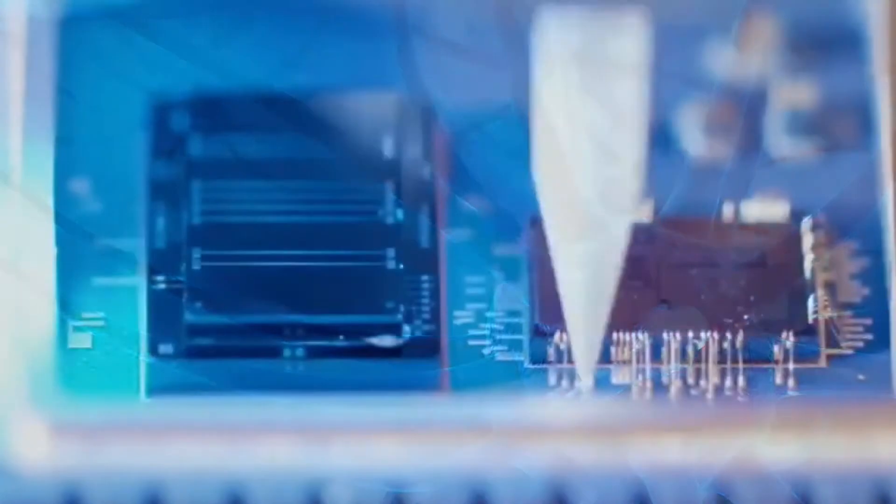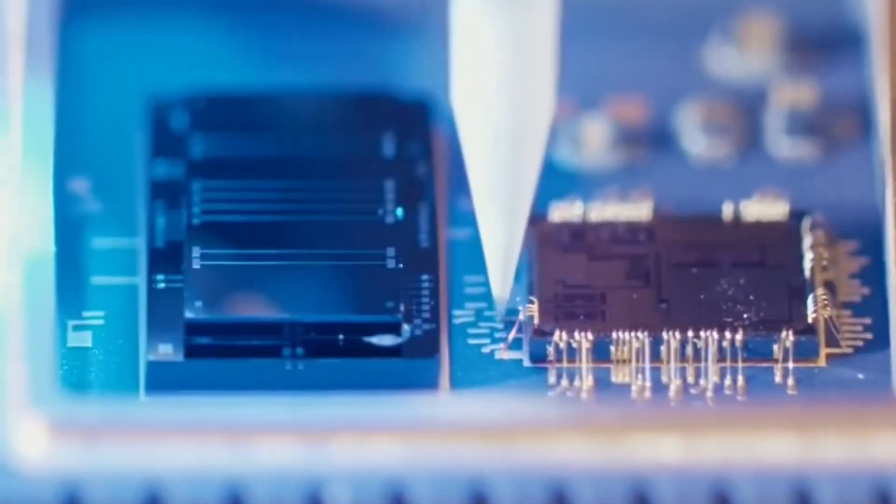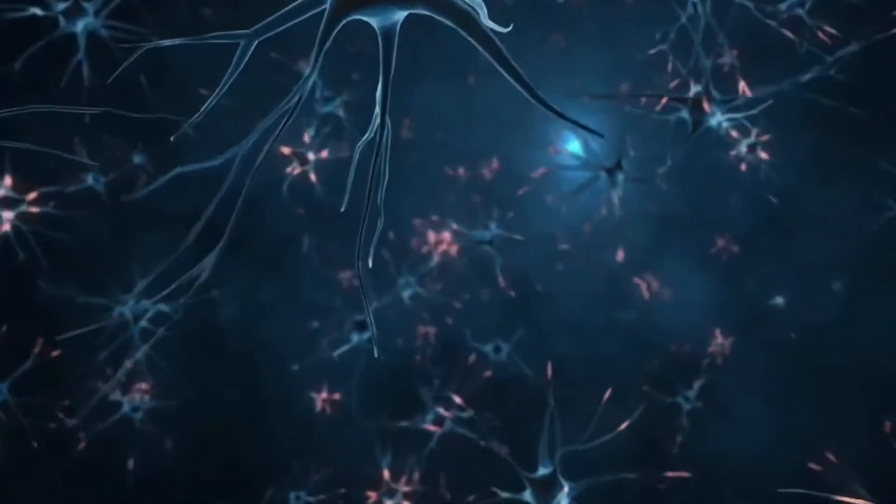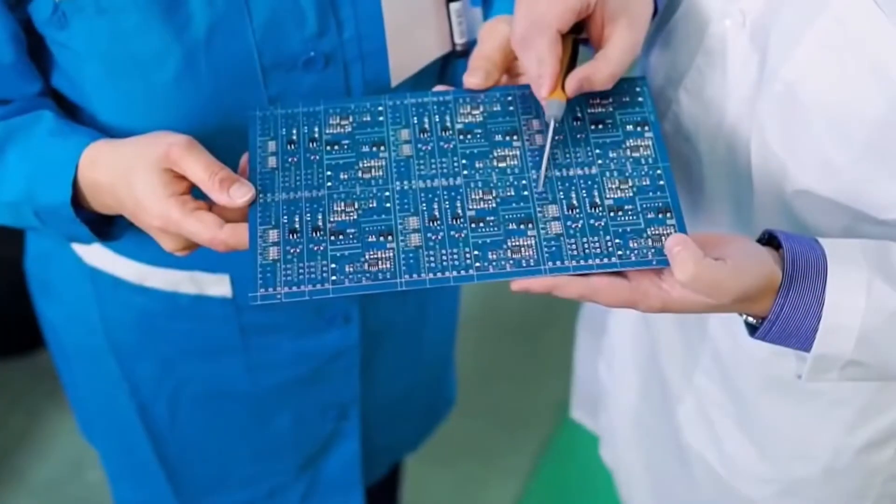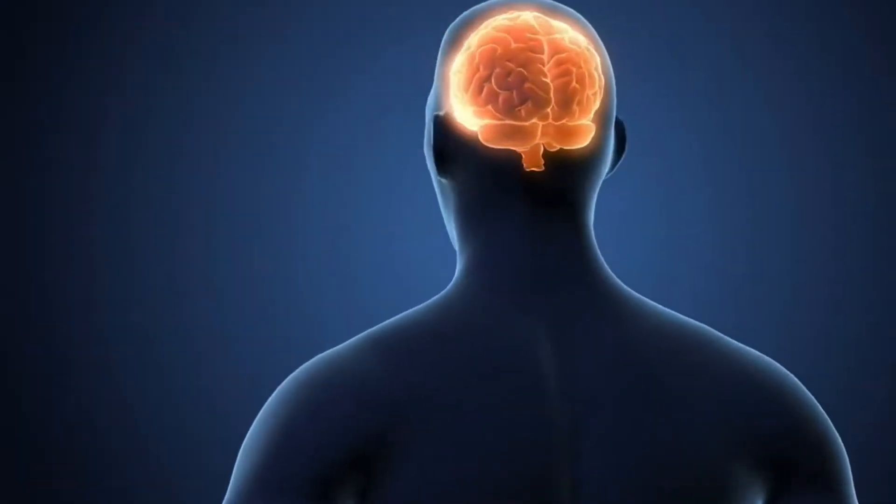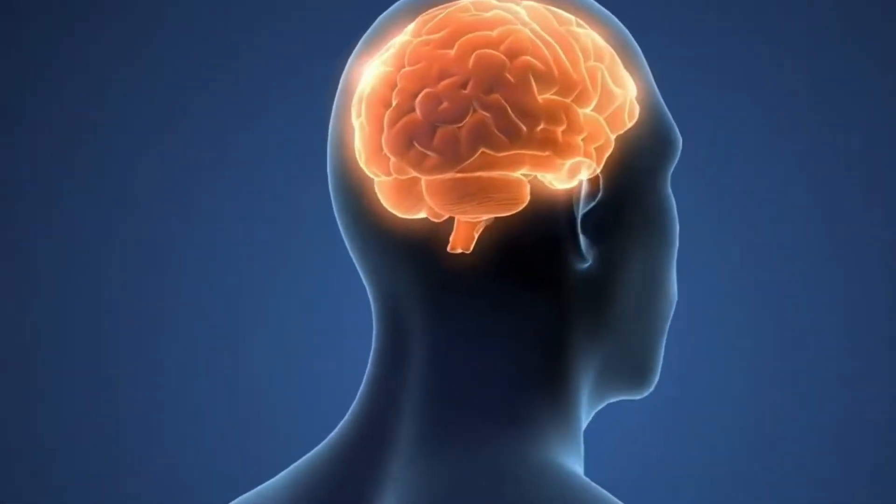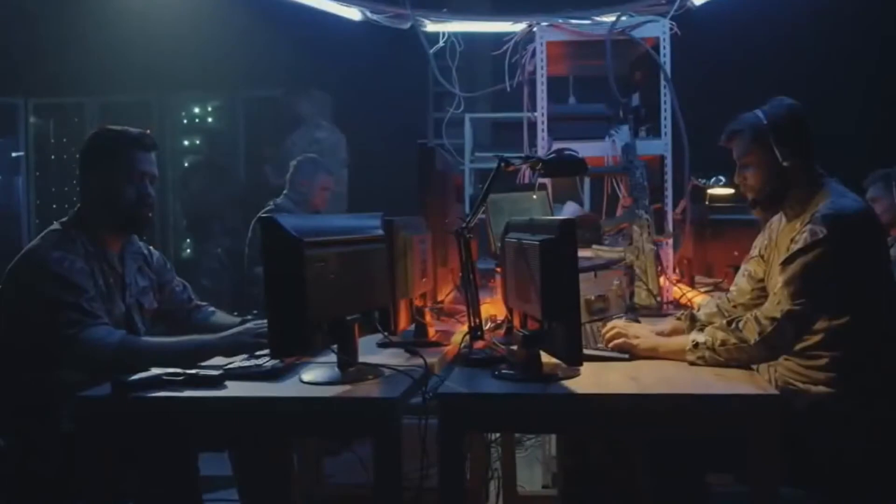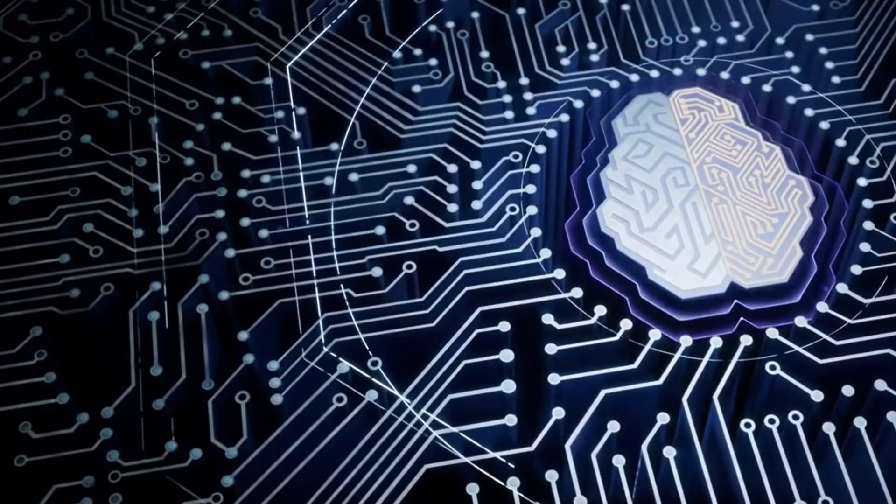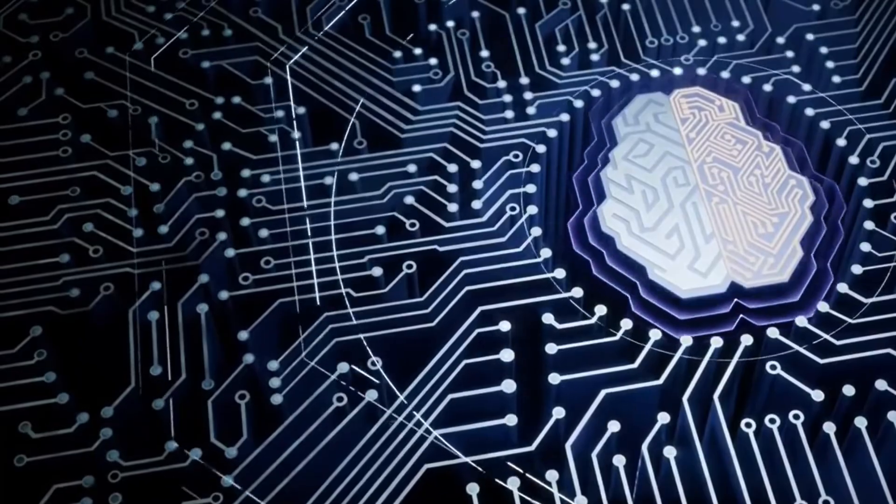100 trillion parameters is a lot. To understand just how big that number is, let's compare it with our brain. The brain has around 80 to 100 billion neurons, GPT-3's order of magnitude, and around 100 trillion synapses. GPT-4 will have as many parameters as the brain has synapses.